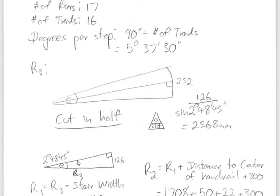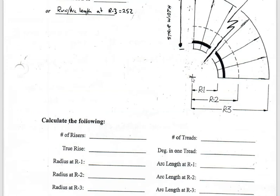With trigonometry, we're looking for the hypotenuse — R3 would be the hypotenuse of that right-angle triangle. We have an opposite dimension and an angle, so O over H means we use sine. Covering up the unknown hypotenuse, we get opposite over sine of the angle. That gives us R3 = 2568, so the dimension from the center of the circle all the way to the outside is 2568.